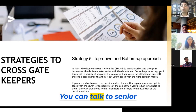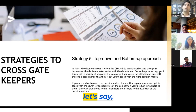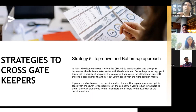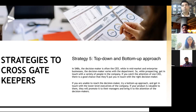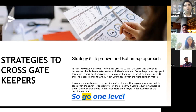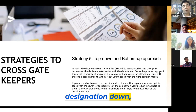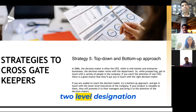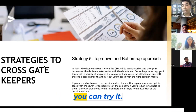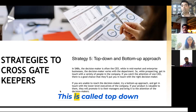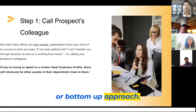Or you can start with the bottom-up approach. You can talk to a senior executive, or let's say a manager, and go one level designation down, two levels designation down, three levels designation down. Like that, you can try it. This is called the top-down or bottom-up approach.